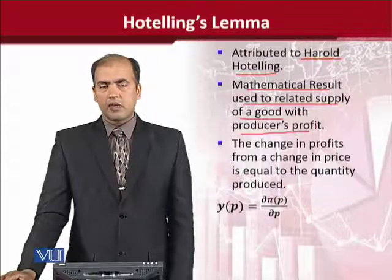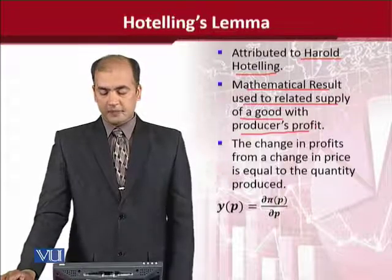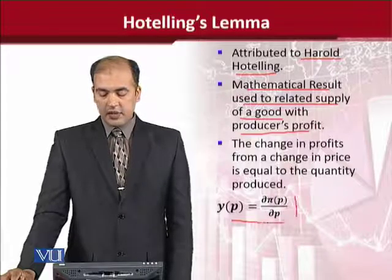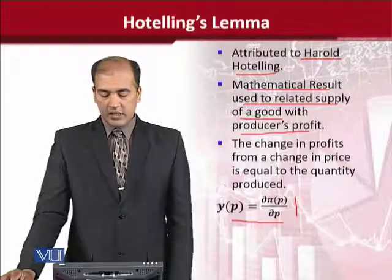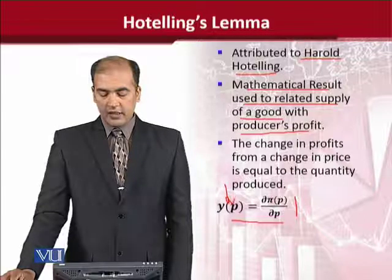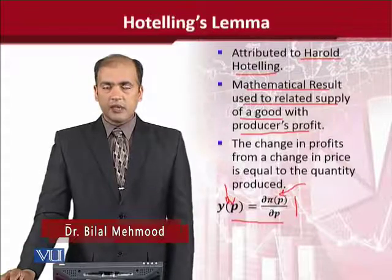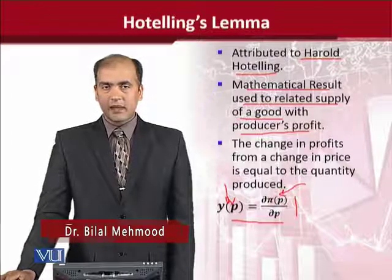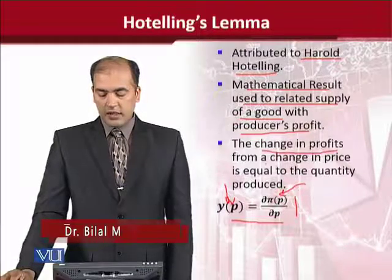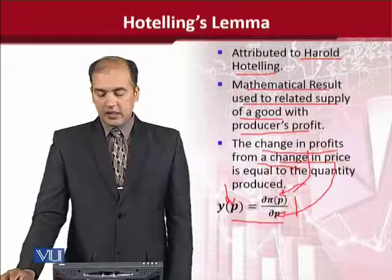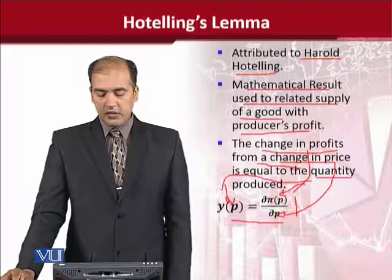So let us see how we can actually calculate this. If we want to mention this formula, you can see that this is the supply and it is equal to the derivative of the profit function with respect to the price of the commodity. We have explained in the text that the change in profits with respect to the change in price is equal to the quantity produced.